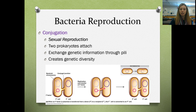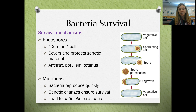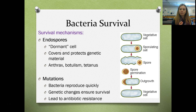Bacteria utilize different adaptations for survival. One is the endospore — some bacteria produce a dormant cell that covers and protects the genetic material, acting like a seed protection covering that allows survival in extreme or variable environments. Anthrax, botulism, and tetanus are examples of bacteria that use endospores. Many bacteria also reproduce and mutate quickly, leading to genetic changes that ensure the survival of at least some organisms — but this is also what leads to antibiotic resistance.